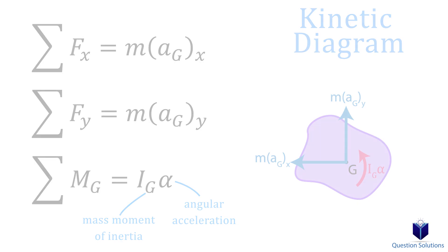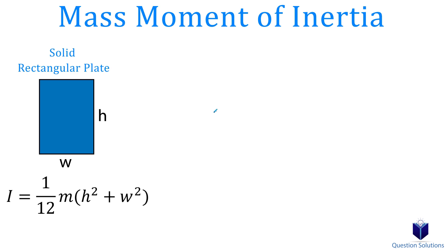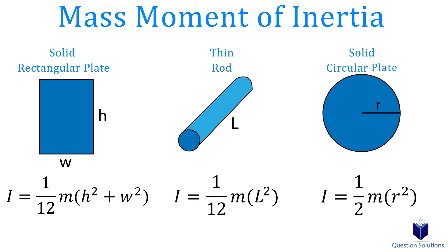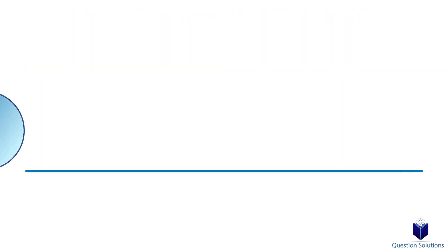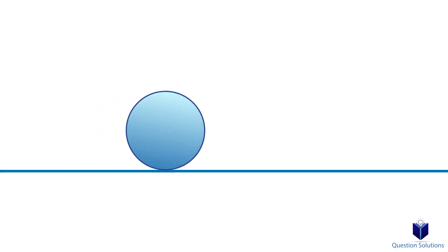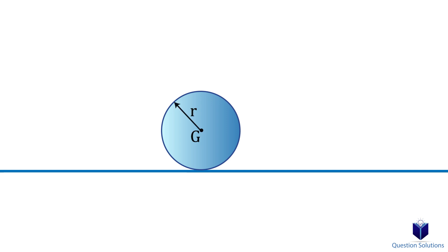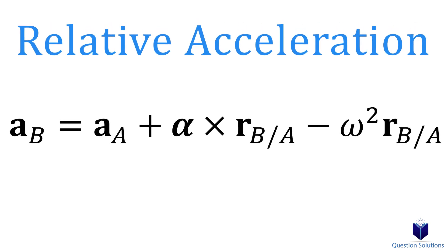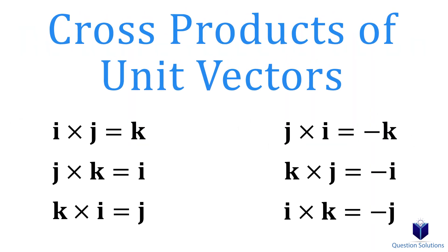The mass moment of inertia can be found using specific equations depending on the object — I'm only showing a few here, but you can search for equations for all sorts of objects. Keep in mind that if a question involves a wheel, disc, or ball rolling without slipping, the acceleration at the center can be found using a specific equation. You should also be familiar with the relative acceleration equation, and remember what happens when we do cross products of unit vectors, since this will be needed to solve questions.